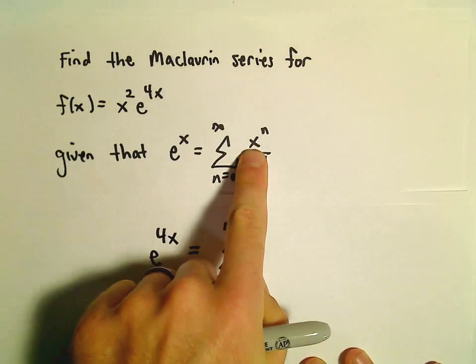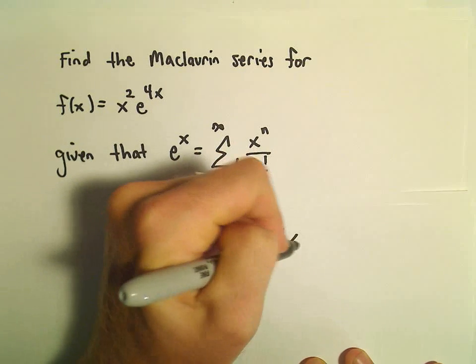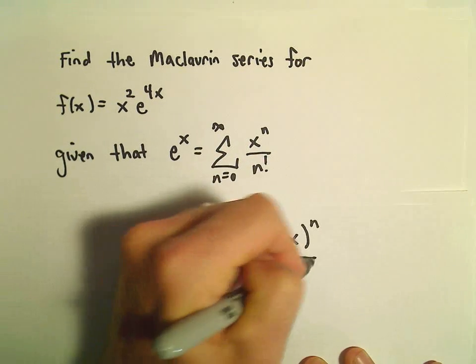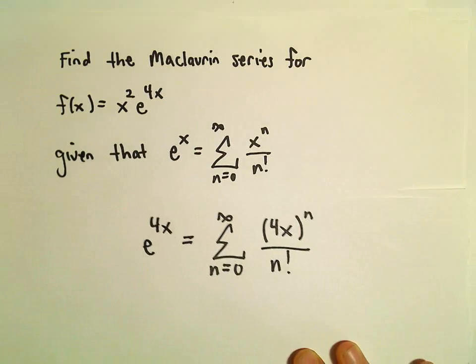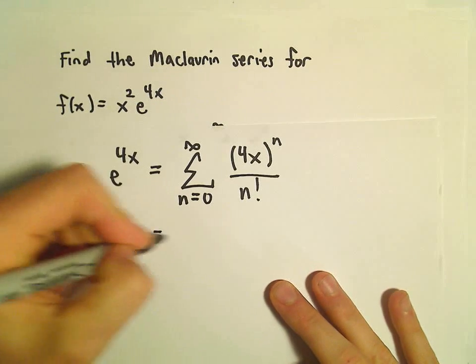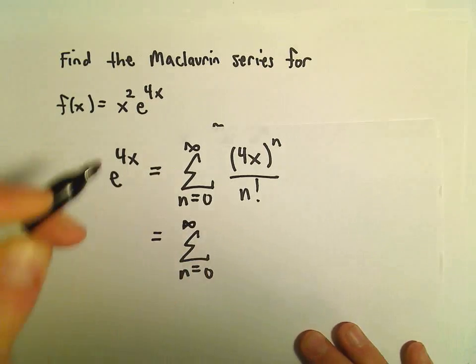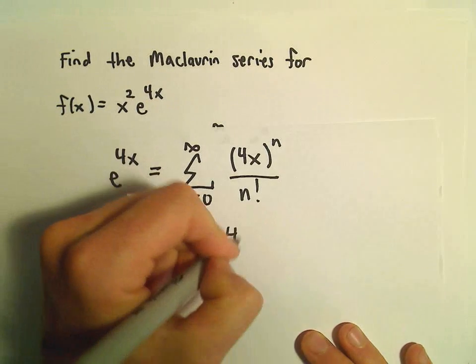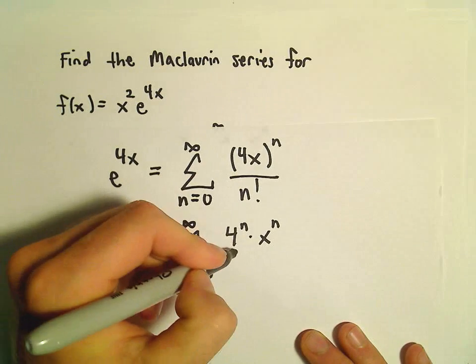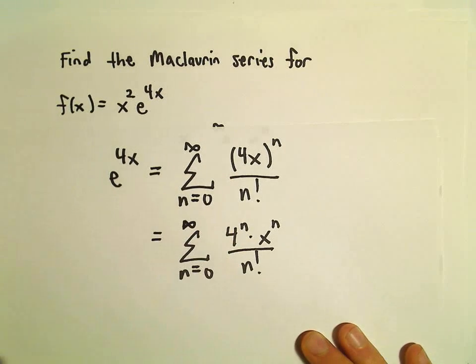So instead of just x being raised to the n power, we'll now have 4x being raised to the n power, still over n factorial. And we can simplify this a little bit. I usually bust it up. So we can write this as 4 to the n times x raised to the n power, all over n factorial.